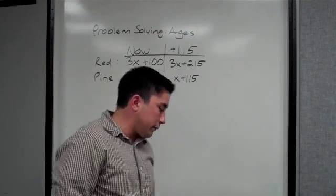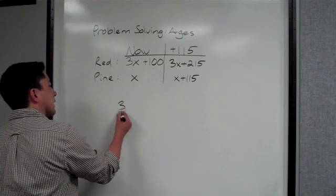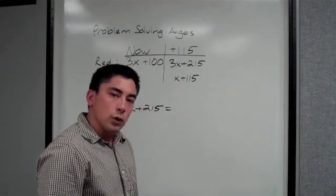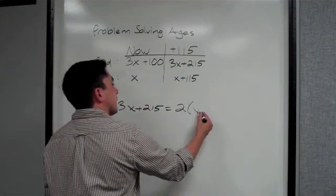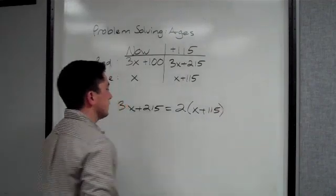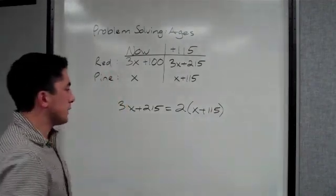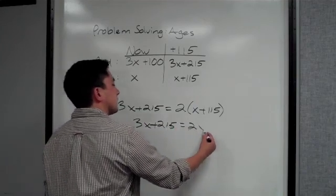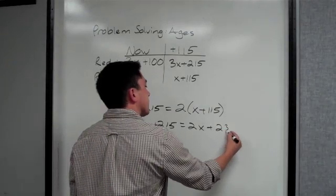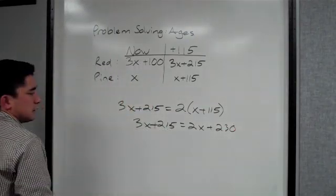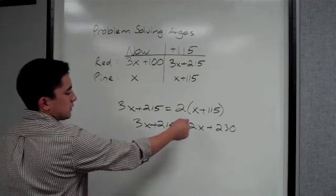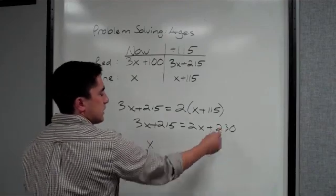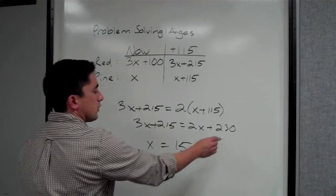So it says in 115 years, redwood tree, so the redwood tree 3X plus 215, will be twice as old as the pine tree. Twice as old as the pine. So that is our setup. So now we can distribute that 2. 3X plus 215 is equal to 2X plus 230. So I'm going to subtract the 2X from both sides. 3X minus 2X is 1X. I'm going to subtract the 215 from both sides, which leaves me with 15 over here.